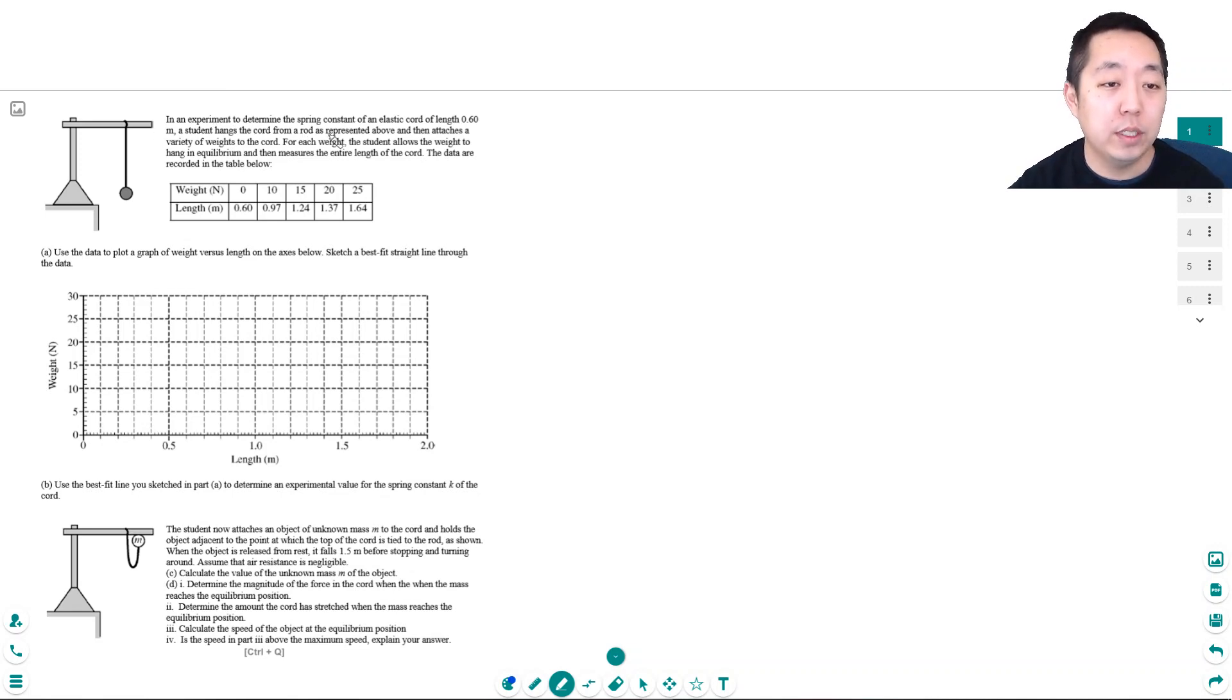So I have an experiment to determine the spring constant of an elastic cord of length 0.6 meters. A student hangs the cord from a rod and attaches a variety of weights to the cord. For each weight the student allows the weight to hang in equilibrium and then measures the entire length of the cord. The data is recorded in the table below. This is the weight and this is the length. Use the data plot of weight versus length on the axis below and sketch a best fit straight line through the data. So this one's pretty straightforward, you're going to just put the data.